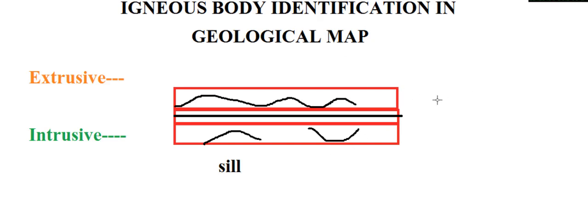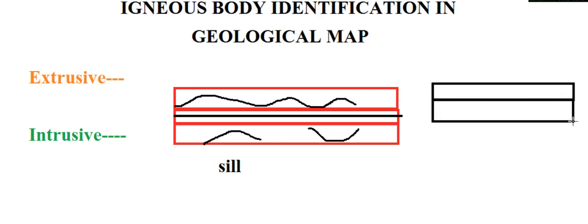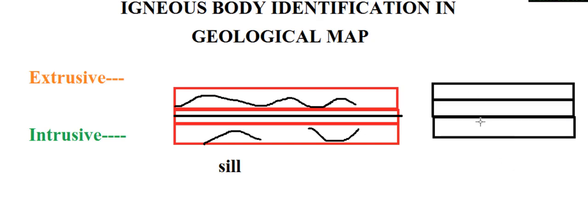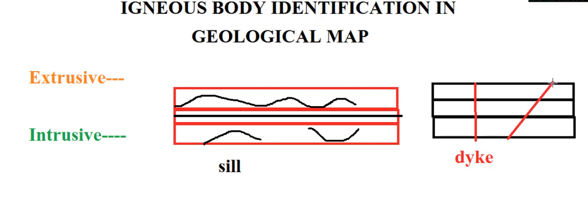Depending on the shape, the name is recorded as laccolith, phacolith, and another important character found in geological maps. This is the type injected across the geological bed. Assume these three are geological beds and if the igneous body cuts across all the beds, this is called a dyke. Sometimes it is vertical, sometimes oblique, but it cuts across the geological beds or lithological beds. This is the main differentiation between a sill and a dyke.